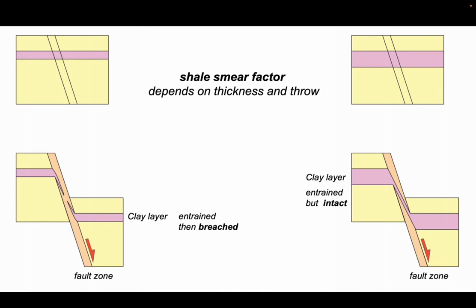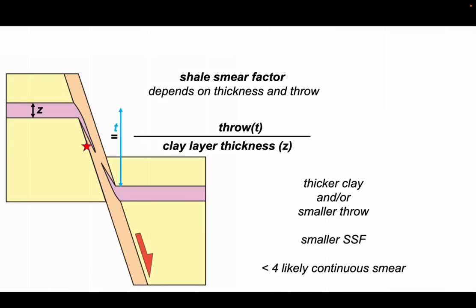What we can do is parameterize this with the shale smear factor, which depends on the thickness of the original clay or shale layer and the throw on the fault. It's parameterized like this: it's the throw divided by the clay layer thickness. So consider a point on the fault, measure the clay layer thickness z, the throw, and that allows us to estimate the shale smear factor. It's a really simple calculation to perform. The thicker the clay or the smaller the throw, the smaller the shale smear factor. Parameterization in sedimentary basins suggests that values of less than four for shale smear factor suggest that the smear is likely to be continuous, so that fluid transmissibility across the fault zone will be impeded.